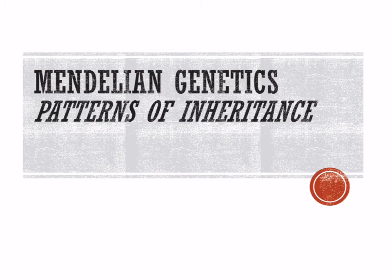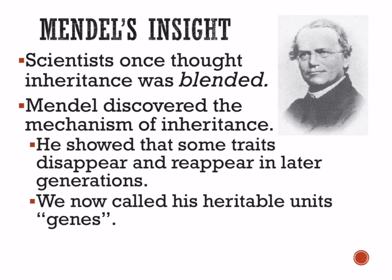This is going to be our first lesson on genetics, and in this lesson we're just going to be discussing some of the basics of inheritance. At one point in time, scientists thought that inheritance — traits being passed from parents to offspring — was always blended. That is, traits of the mother and father were combined and formed some kind of intermediate trait, something in between. Red plus white equals pink, or something like that.